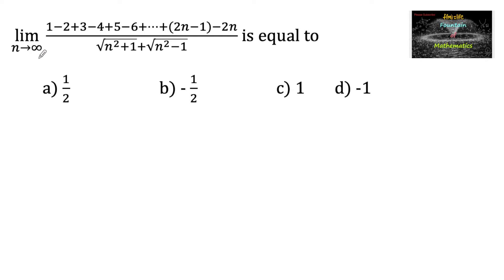Find the limit as n tends to infinity of (1 minus 2 plus 3 minus 4 plus 5 minus 6 and so on, up to (2n minus 1) minus 2n), divided by root of (n squared plus 1) plus root of (n squared minus 1). There are 2n terms in the numerator.